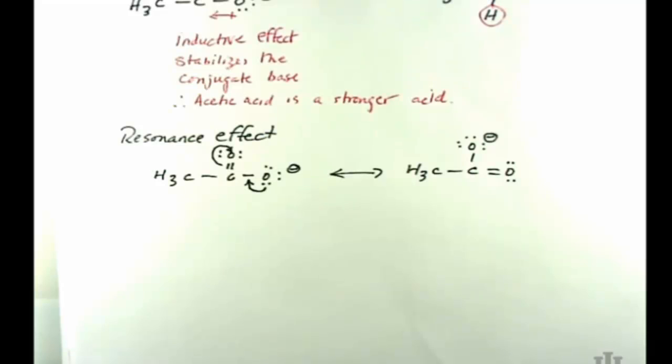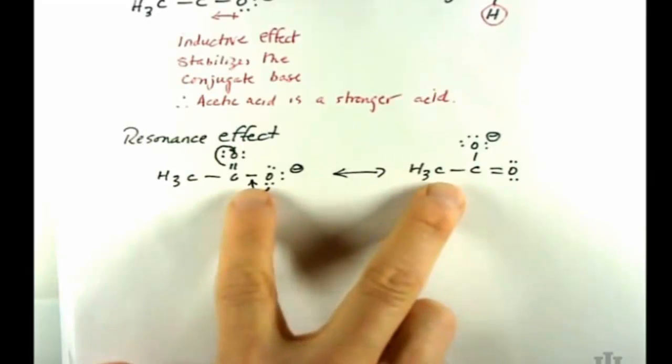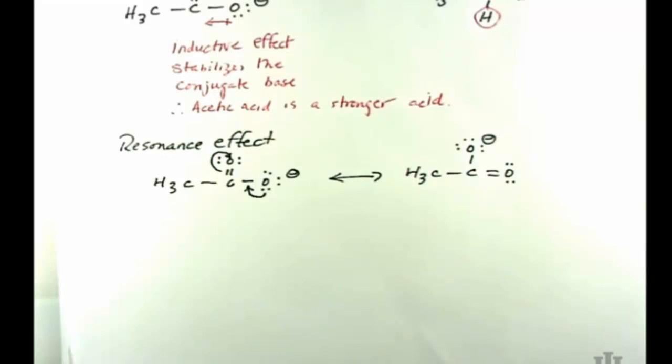That charge delocalization has the same effect here: if you delocalize charge you increase the stability of whatever species you're looking at. And here if you increase the stability of the conjugate base of acetic acid, you allow that acid-base equilibrium where acetic acid transfers its proton to water to go more towards the product side.